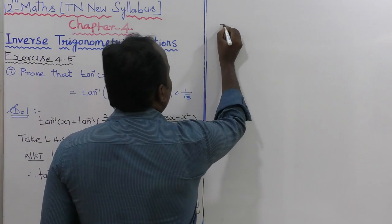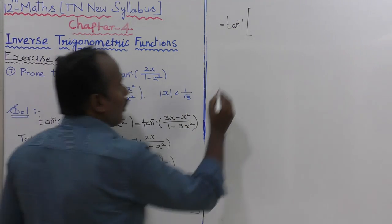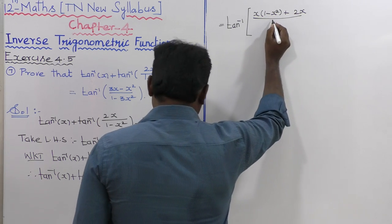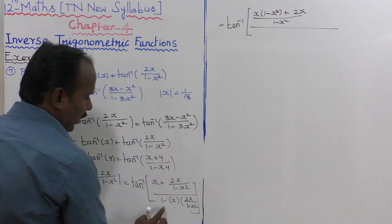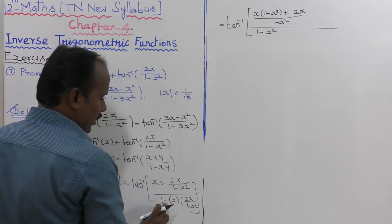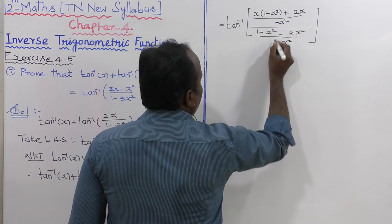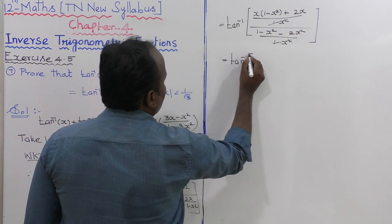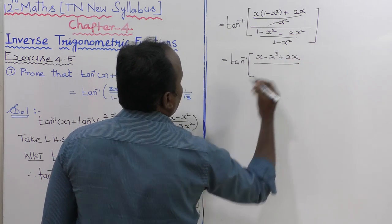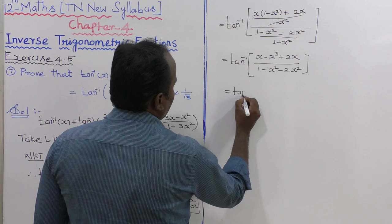By cross multiplication, the numerator becomes x into 1 minus x squared plus 2x, the whole divided by 1 minus x squared. The denominator becomes 1 minus x squared minus 2x squared, the whole divided by 1 minus x squared. The denominator cancels, giving tan inverse of x minus x cubed plus 2x, divided by 1 minus x squared minus 2x squared.